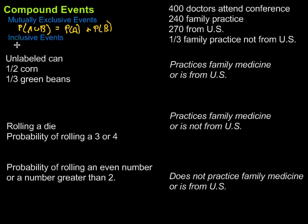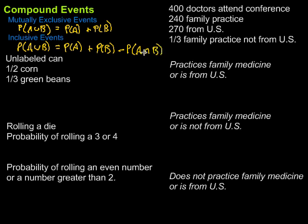For inclusive events, it's pretty much the same to start. The probability of A or B equals the probability of A plus the probability of B, but then we subtract the probability of getting A and B — using the intersection symbol to represent 'and.' That subtraction clears out the ones we double count because they're in both groups.